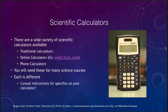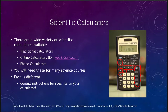An ordinary calculator has basic functions like addition, subtraction, multiplication, and division, which are also present on a scientific calculator. Sometimes a traditional calculator will have a square root key, but on a scientific calculator you also have trigonometric functions, multiple ways to do exponents, and logarithms — things you may use in various science courses.